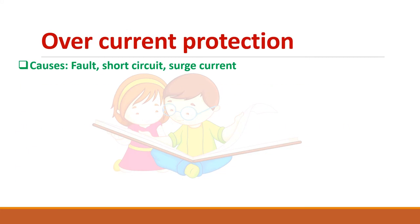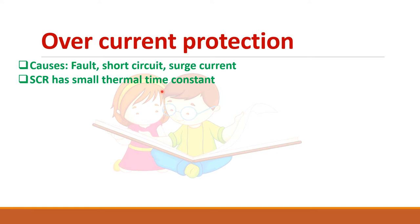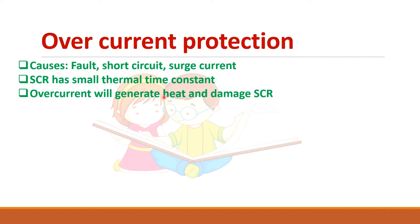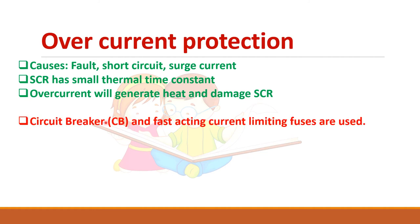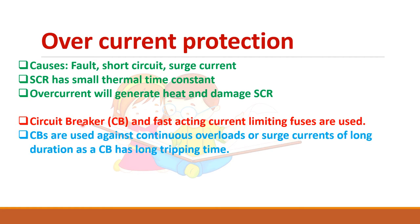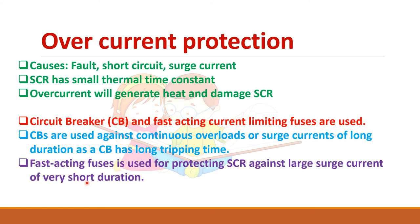The major causes for overcurrent are faults, short circuits, and surge currents. Since SCR has a small thermal time constant, it cannot carry more than the rated current for a long time. Overcurrent generates heat and damages the SCR. Normally circuit breakers and fast acting current limiting fuses are used. Circuit breakers protect against continuous overload or surge currents of longer duration, whereas fast acting limiting fuses protect against large surge currents of very short duration.